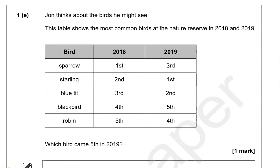John thinks about the birds he might see. This table shows the most common birds at the nature reserve in 2018 and 2019. Which bird came fifth in 2019? So we're focusing on 2019, fifth. That's this one. So that's the blackbird.